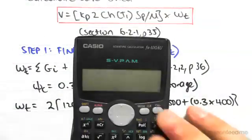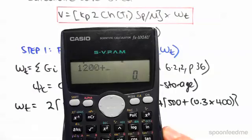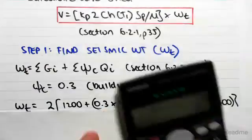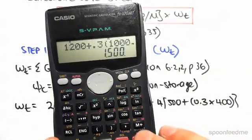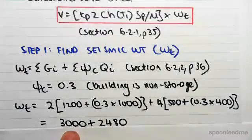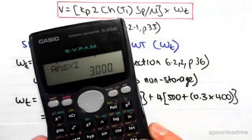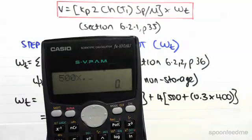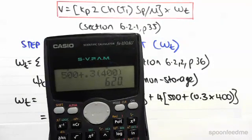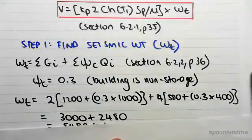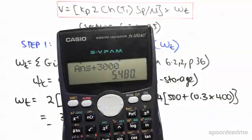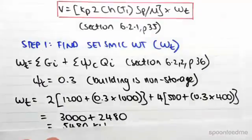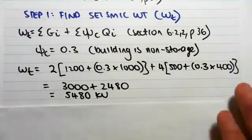If we work this out, 1200 plus 0.3 times 1000, times by 2, gives us 3000. The second calculation, 500 plus 0.3 times 400, times by 4, gives us 2480. Adding that to the 3000 gives us 5480 kilonewtons. That's the seismic weight.